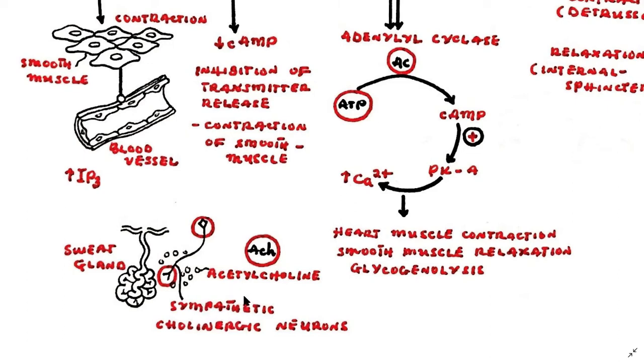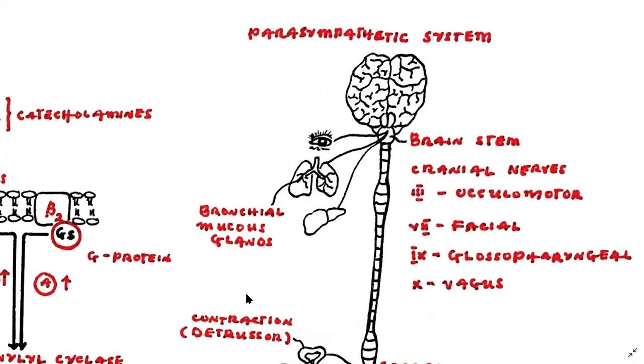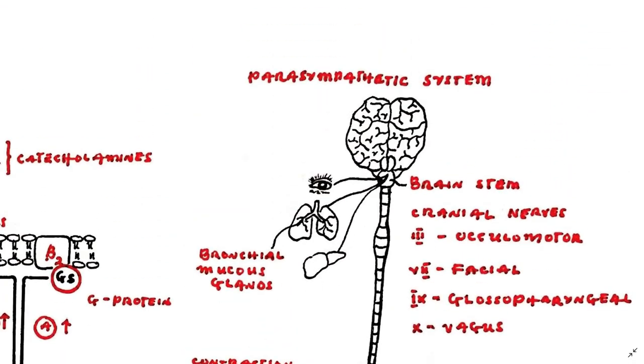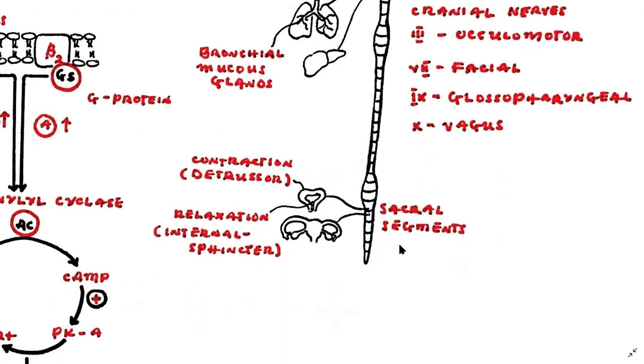Parasympathetic preganglionic neurons originate in the brain stem. They run in cranial nerve 3, cranial nerve 7, cranial nerve 9, and cranial nerve 10. They are also seen in the second and third sacral segments of the spinal cord. Parasympathetic activation causes secretion in many glands.